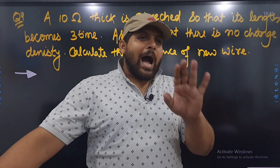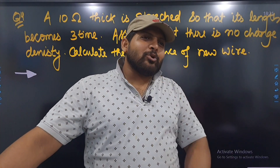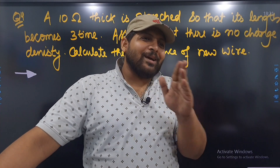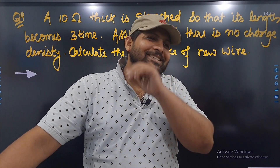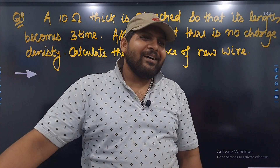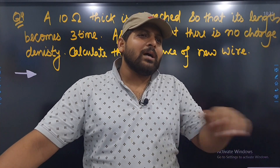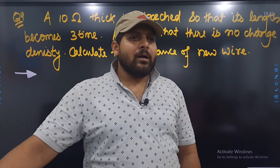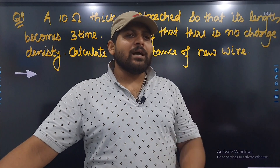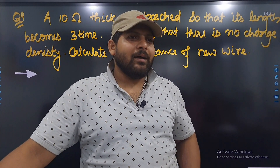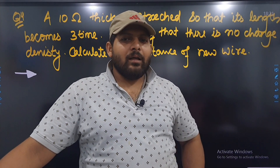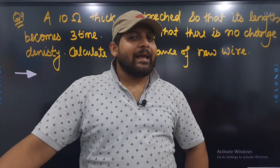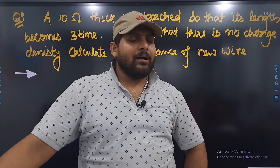R is directly proportional to L, तो resistance — length बढ़ेगा तो resistance बढ़ेगा। Resistance 10 था, 3 गुना हुआ तो 30 हो गया। पर area कम होगा — वो भी लिखना होगा।